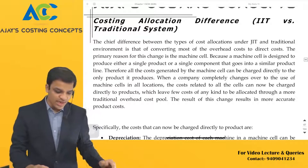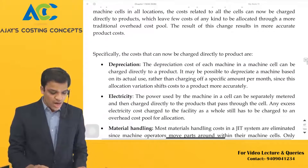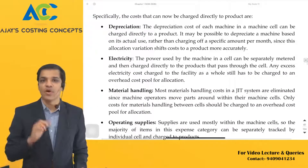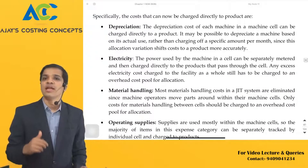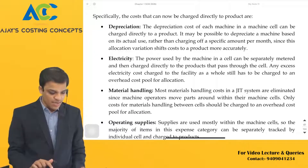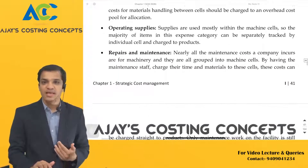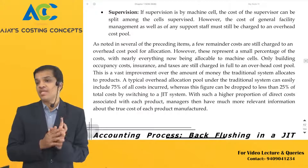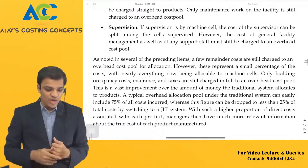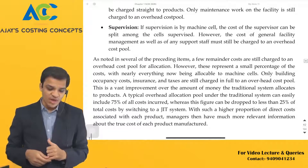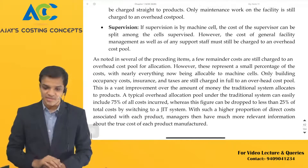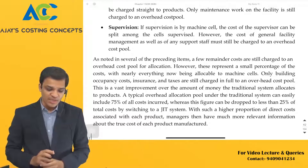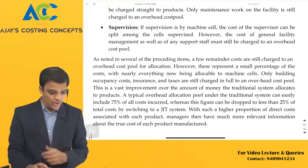In just-in-time versus the traditional system, the costs now charged directly to products include depreciation, material handling, operating supplies, repairs and maintenance, and supervision. If supervision is by machine cell, the cost can be split among the machines supervised. However, costs of general facility management and any support staff must still be charged to an overhead cost pool.